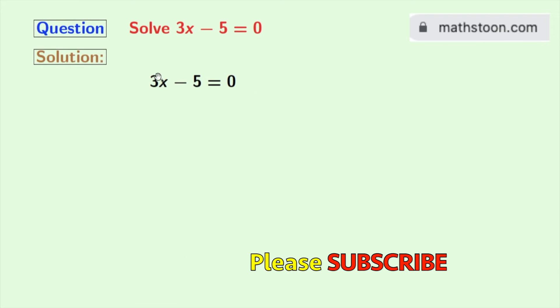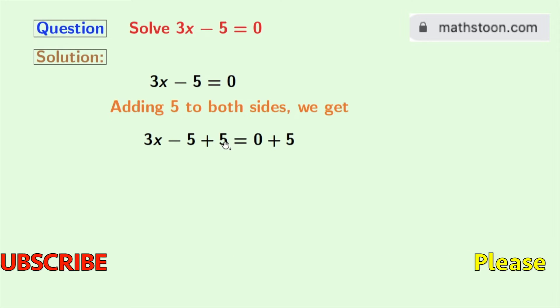This is our given equation. Now to get the value of x, we will add 5 to both sides as we have minus 5 in the left hand side. So doing that we get 3x minus 5 plus 5 is equal to 0 plus 5.